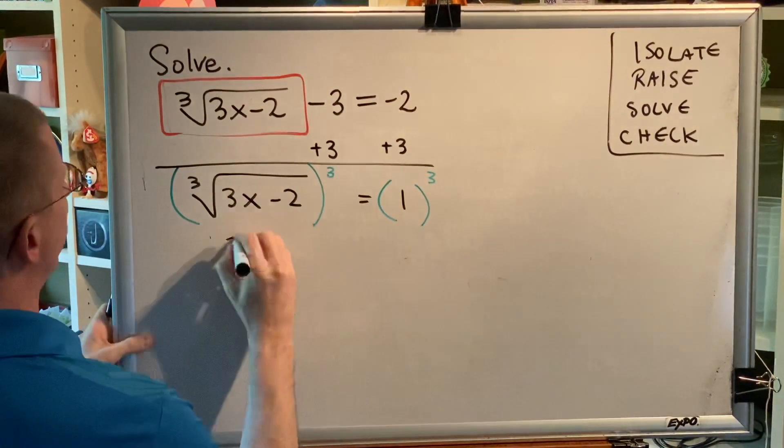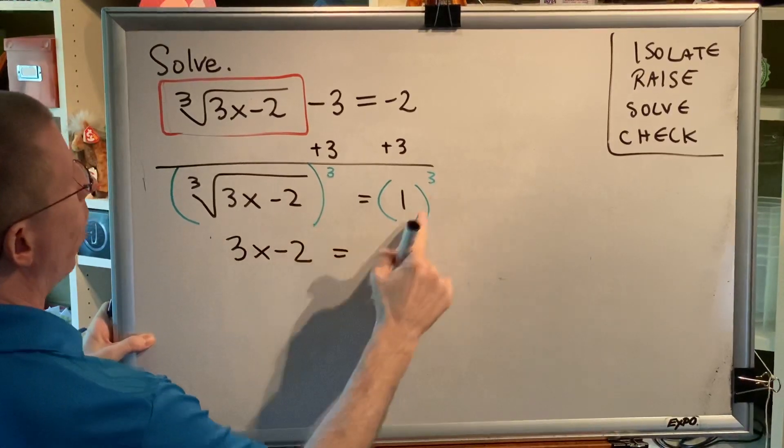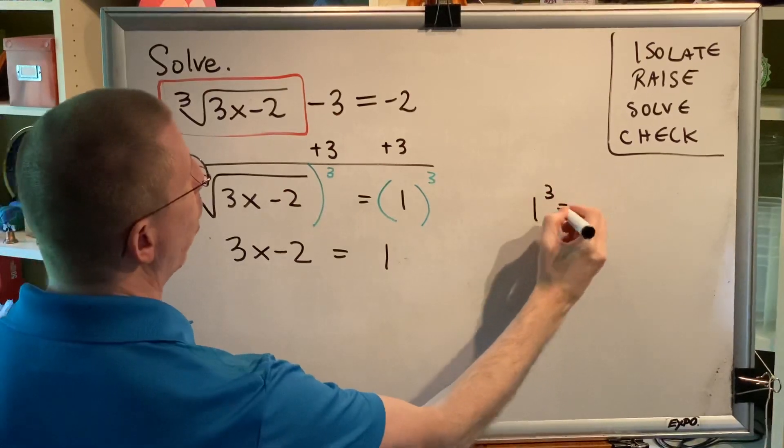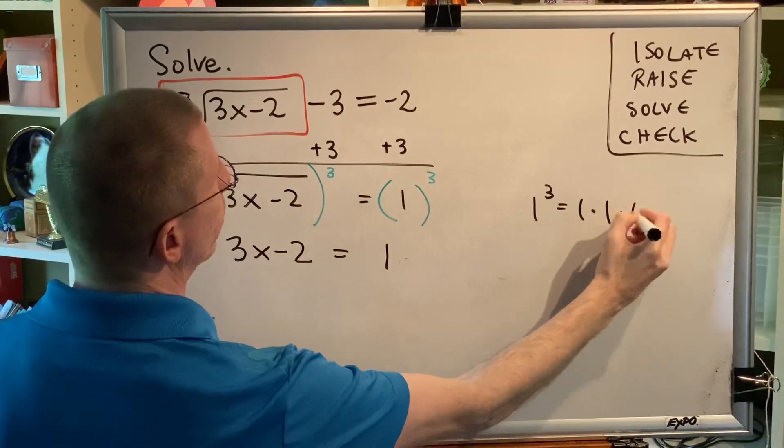The cube and the cube root cancel, leaving us 3x minus 2. 1 raised to the third power is 1, because 1 cubed is 1 times 1 times 1.